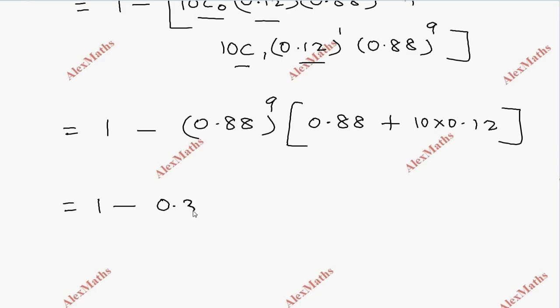This is 0.3165. If we multiply, 10 times 0.12 is 1.2. So 0.88 plus 1.2 is 2.08.